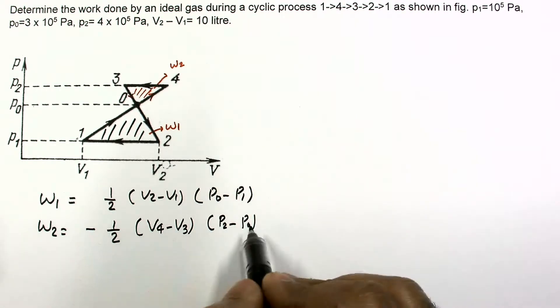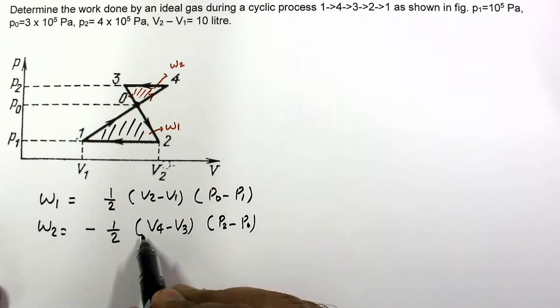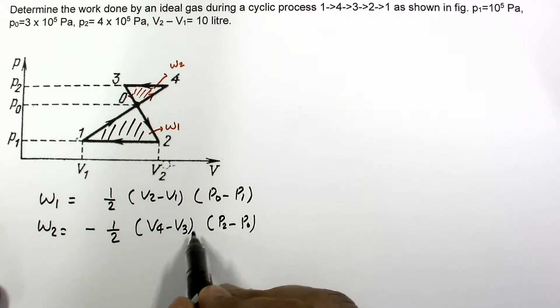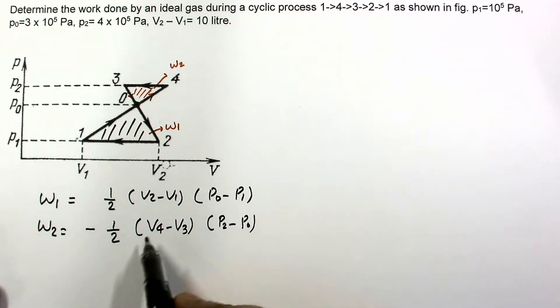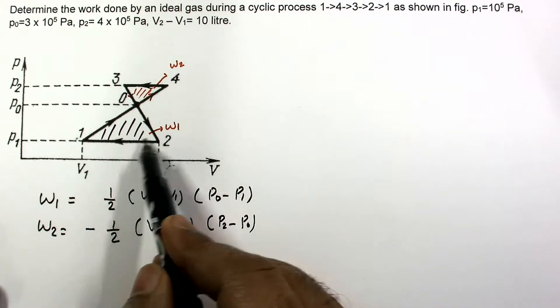So overall this expression is negative, but we are not given the value of V4 minus V3. So we have to calculate from this geometry the value of V4 minus V3.